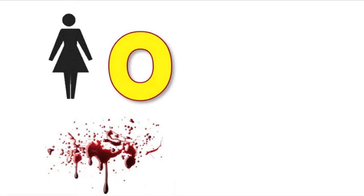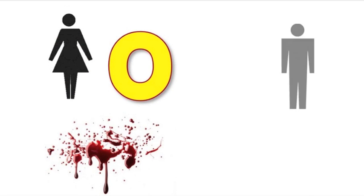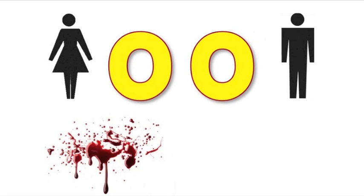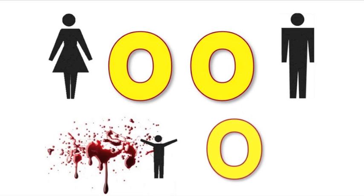The last type of blood that you can inherit would be a recessive O from your mother and a recessive O from your father. In this case, your genes for blood type would be OO and you would have blood type O.